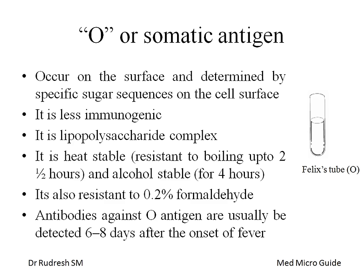Salmonella has two types of antigens: the O antigen, also called the somatic antigen, and the H antigen, known as the flagellar antigen. The O antigen occurs on the surface and is made up of specific sugar sequences. It is less immunogenic, is a lipopolysaccharide complex, heat and alcohol stable, and resistant to 0.2 percent formalin. Antibodies against the O antigen are usually detected after six to eight days of fever onset.